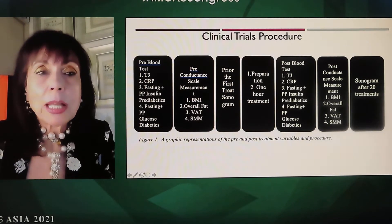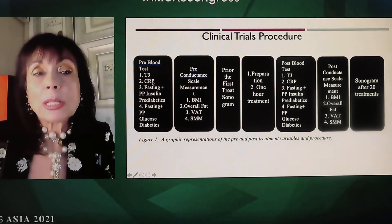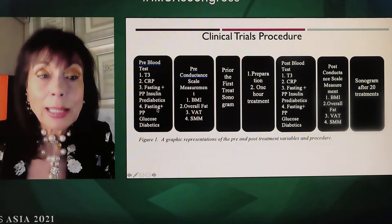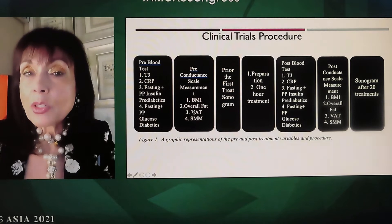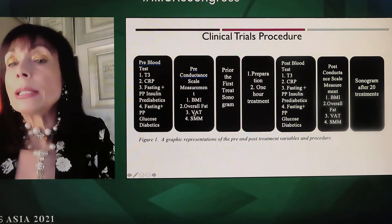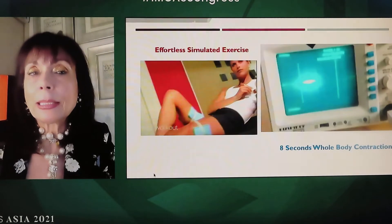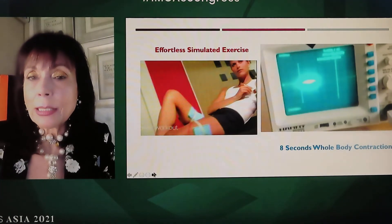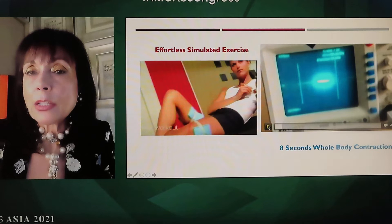This is the design of our study. We did blood tests before and after. We looked at CRP, which is an inflammatory marker, fasting and post-prandial insulin in pre-diabetics, and fasting and post-prandial glucose in diabetics. Eleven subjects had a sonogram before the first treatment, and everybody was tested after 20 treatments. All subjects had some kind of medical disorder, and we used an effortless simulated exercise technology that produces an eight-second muscle contraction.